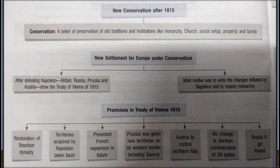When we talk of the Treaty of Vienna of 1815, the provisions include: restoration of the Bourbon dynasty, territories acquired by Napoleon were taken back, it prevented French expansion in future. Prussia was given new territories on its western border including Saxony. Austria was to control northern Italy. No change in German confederation of 39 states, and Russia was to get Poland.